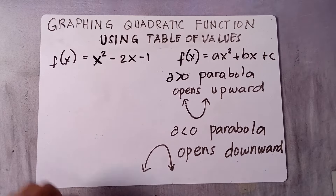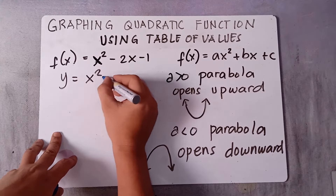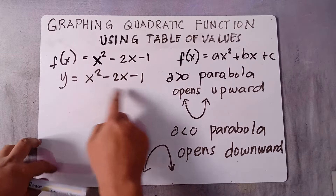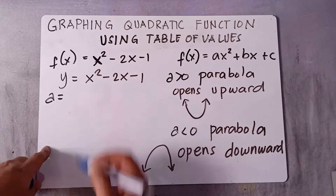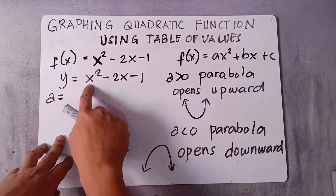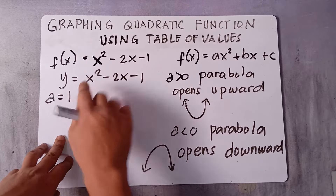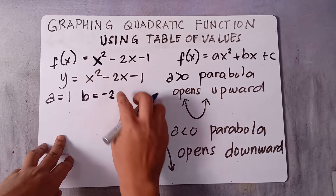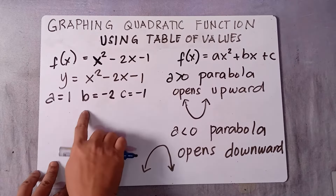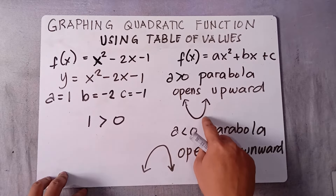In this function, you can also write it as y = x² - 2x - 1. From the general form ax², the value beside x² is understood to be 1, so a = 1. Our b is negative 2 beside x, and our c is negative 1. Since our a is 1 and 1 is greater than 0, our parabola opens upward.